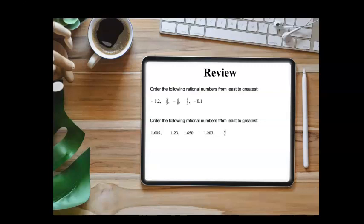Let's watch a short review of Ordering Rational Numbers. Let's review the idea of ordering rational numbers. So we've been given here a set of five numbers: negative 1.2, 2 thirds, negative 5 eighths, 3 fifths, and negative 0.1. We're being asked to order them from least to greatest.